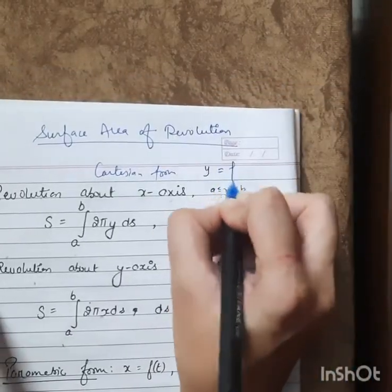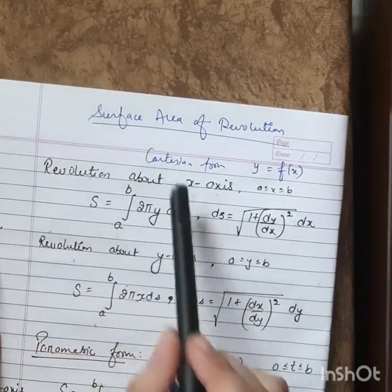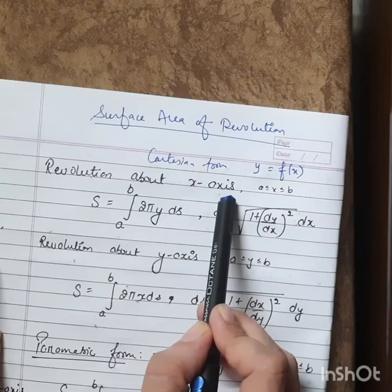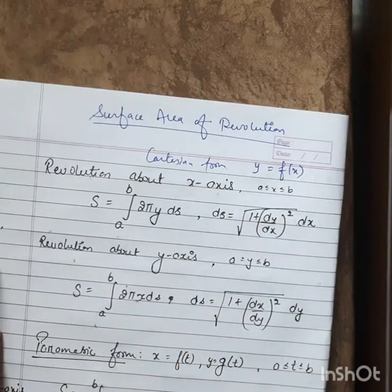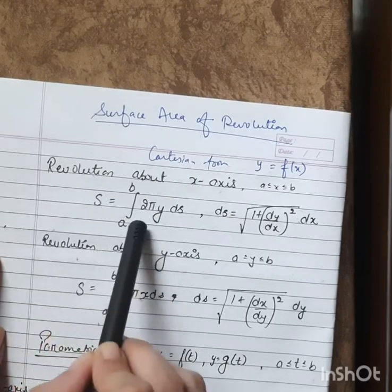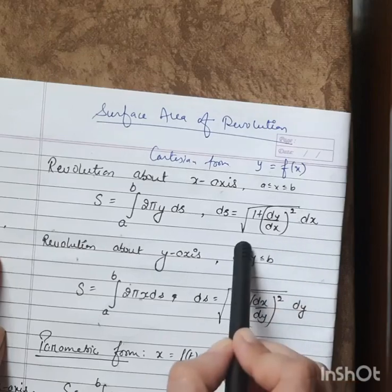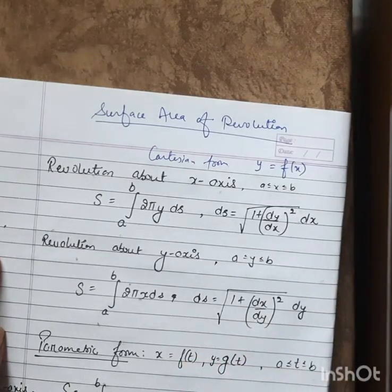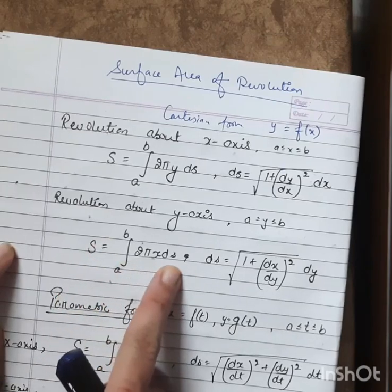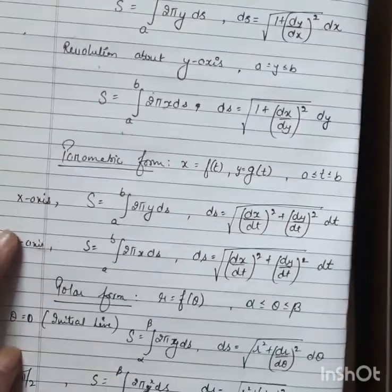In Cartesian form, the equation is given as y = f(x) and we revolve this curve about the x-axis between points a and b. The surface area of the new solid formed is given by the integral from a to b of 2πy ds, where ds is given by the square root of (1 + (dy/dx)²) dx. Similarly, if the revolution is about the y-axis, we use the integral from a to b of 2πx ds, where ds is given by the square root of (1 + (dx/dy)²) dy.